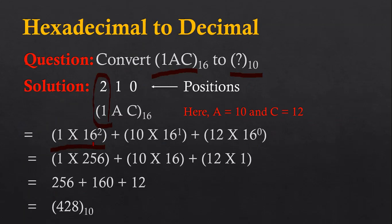1 is multiplied by 16 raised to 2, since 16 is the base and the position of digit 1 is 2. Then A, converted to 10, is multiplied by 16 raised to 1. And similarly, C, converted to 12, is multiplied by 16 raised to 0.